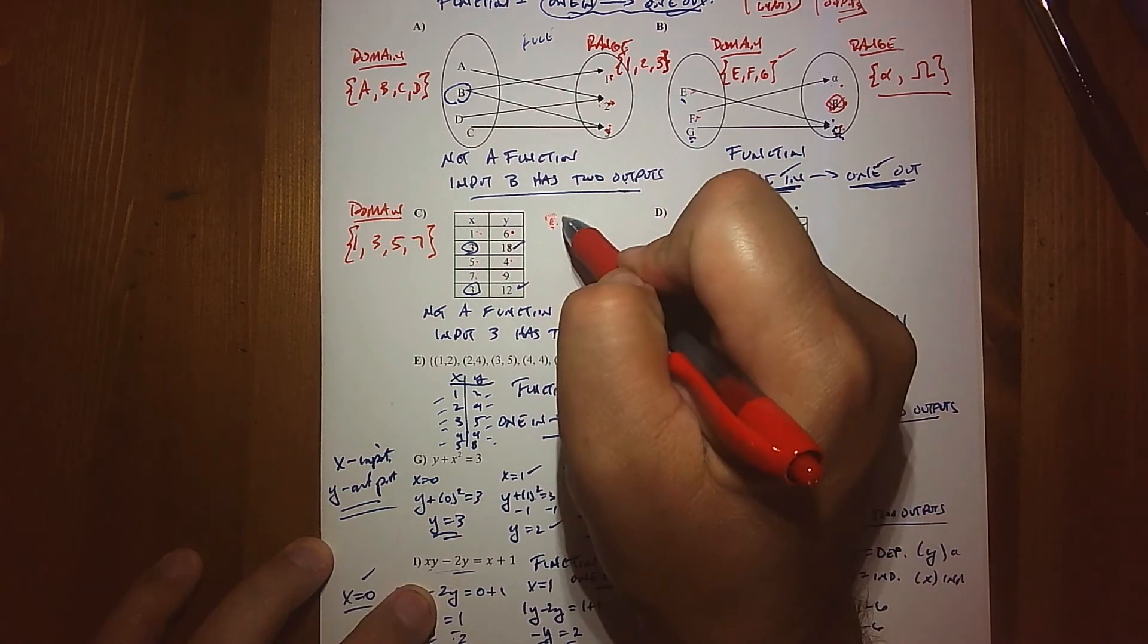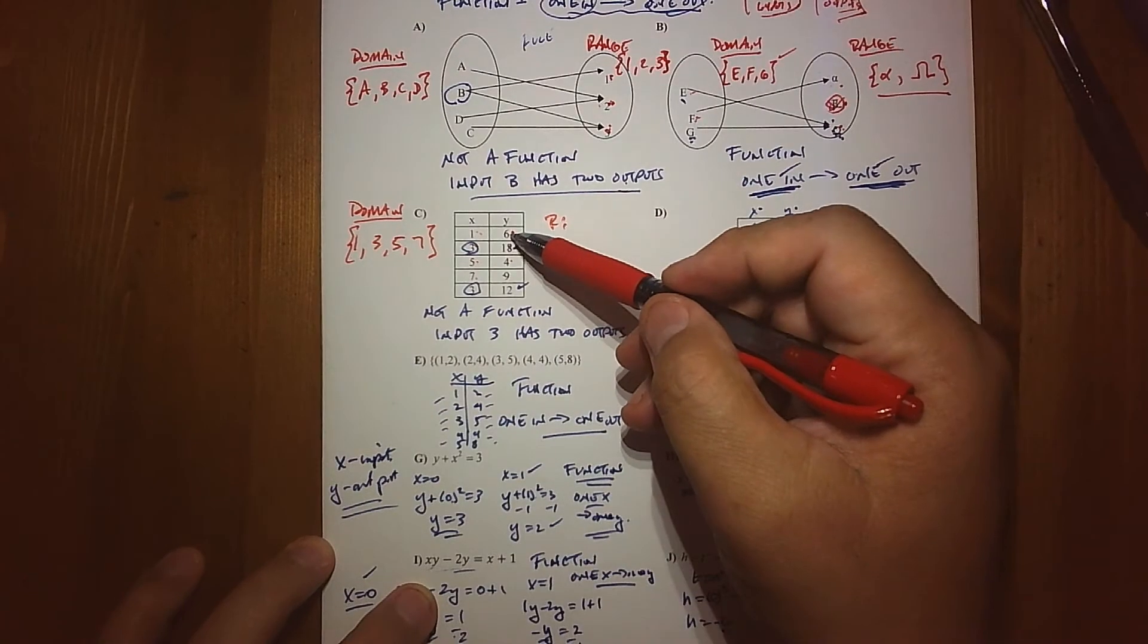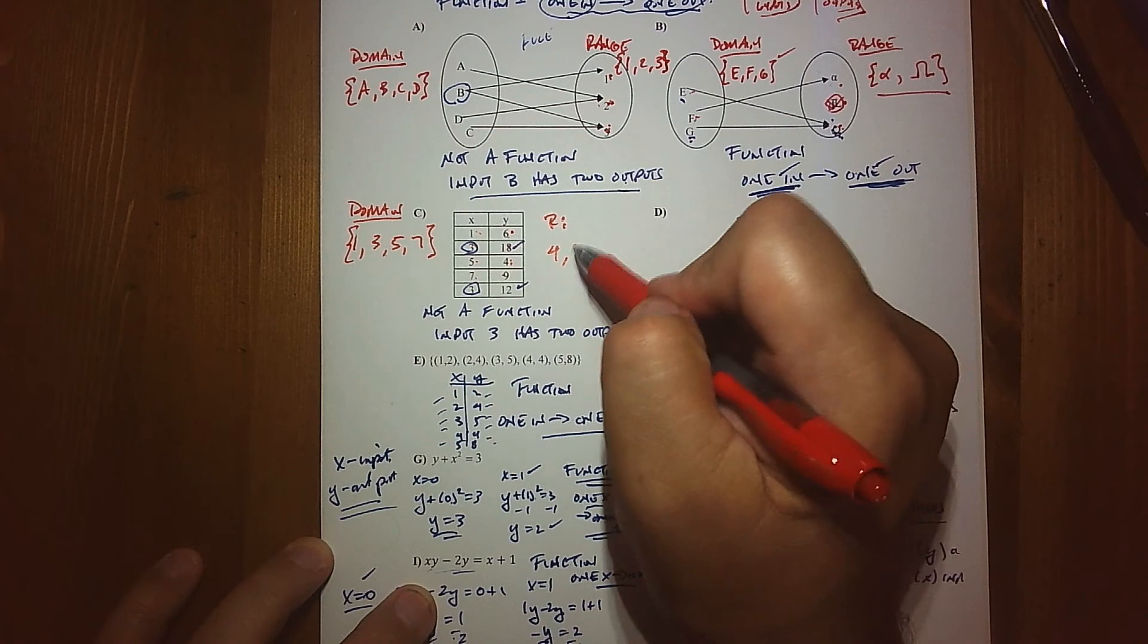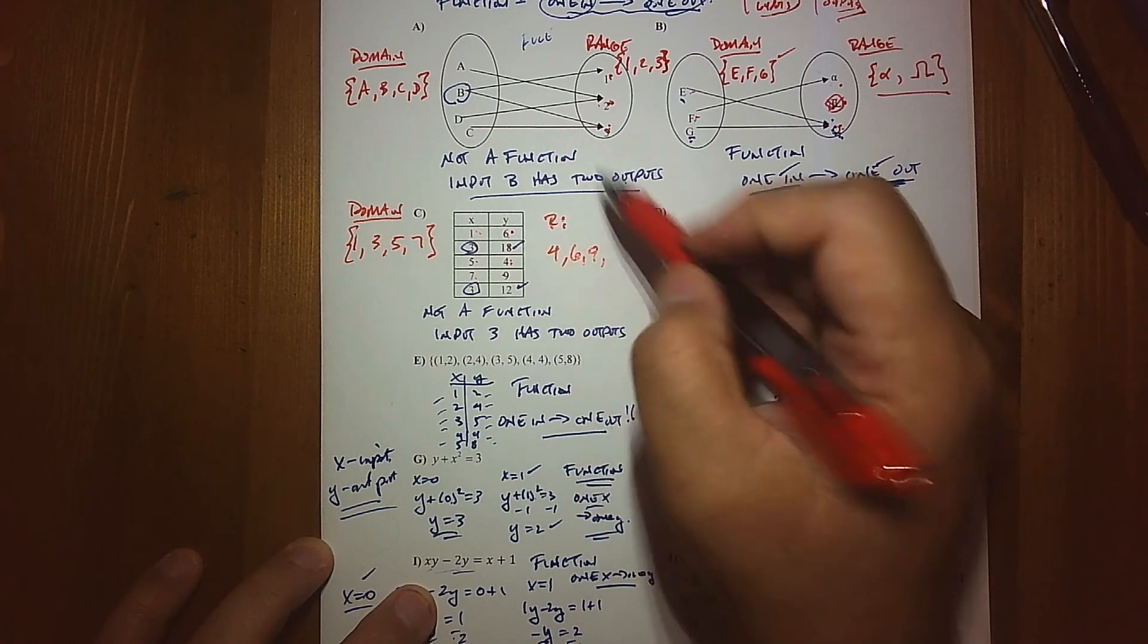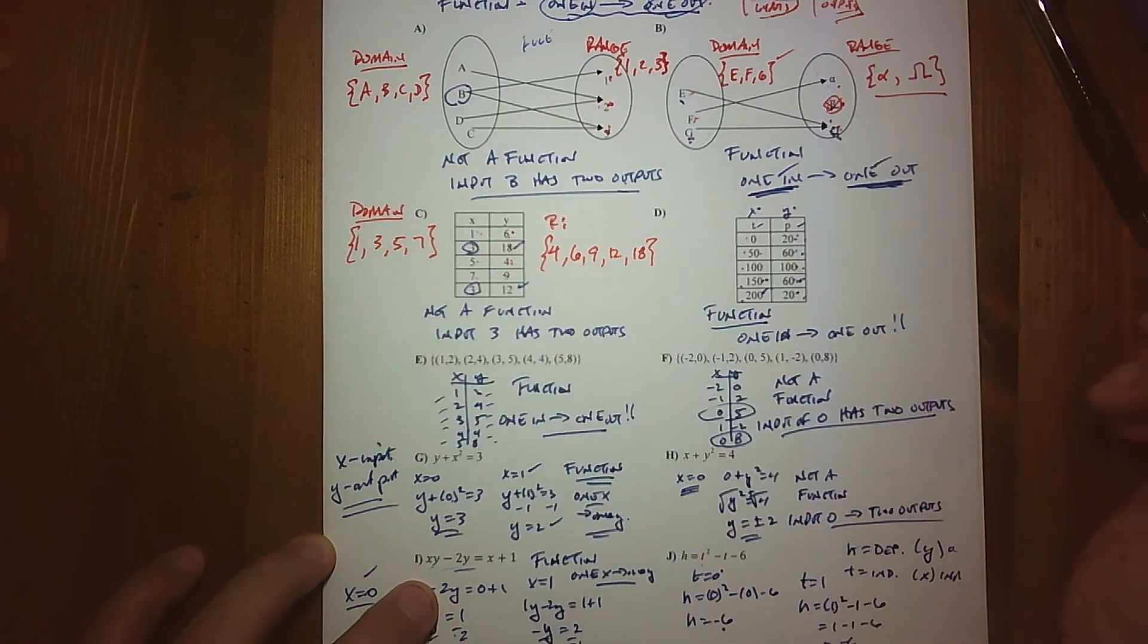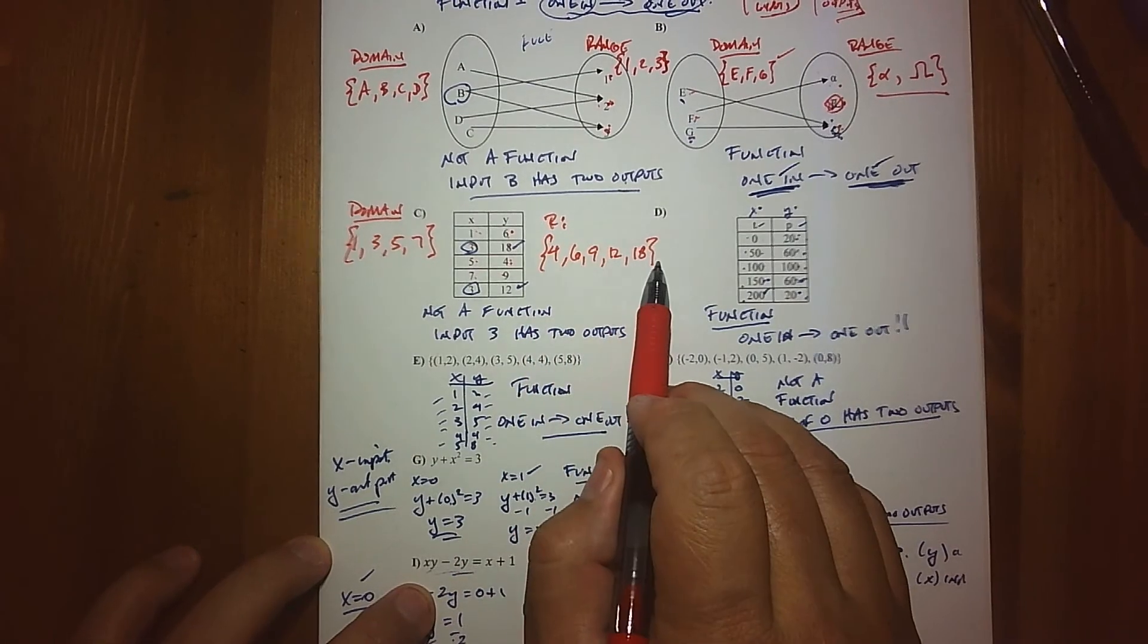You also notice I'm putting things in alphabetical or numerical order, that's also a good habit. What about the range? Well, again, if I look at what's outputted, 4 gets outputted, and 6 gets outputted, 9, 12, and 18. So again, using my curly brackets, we have another discrete case here in terms of our range.